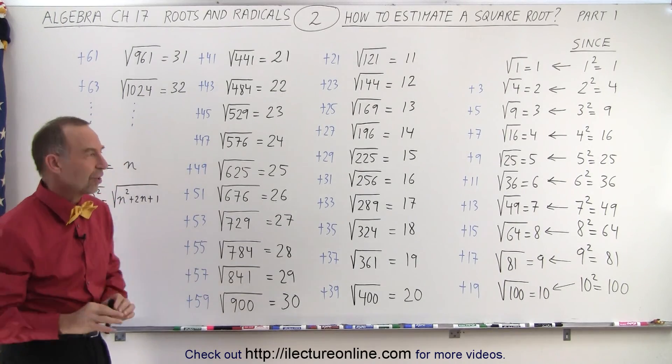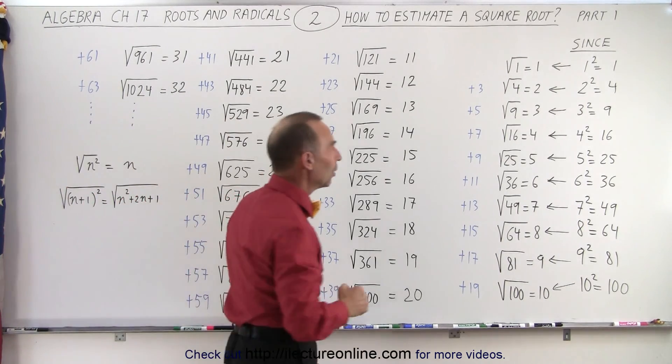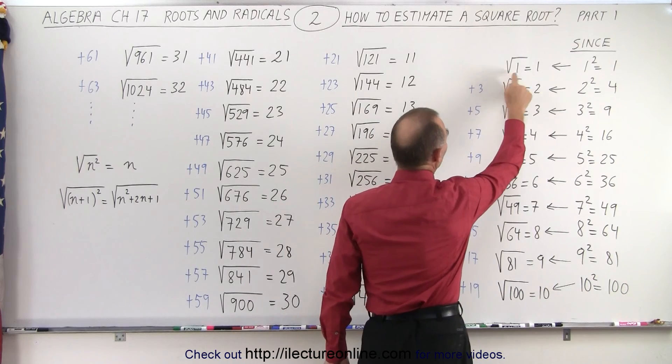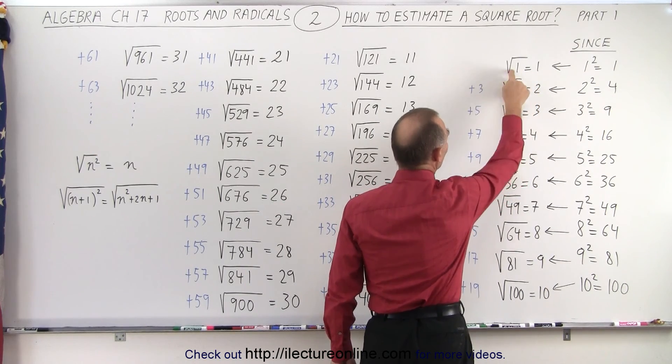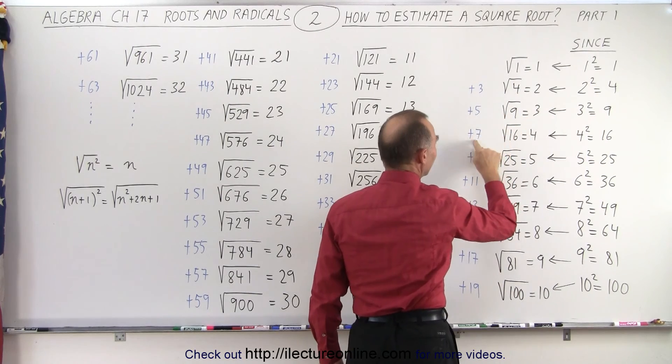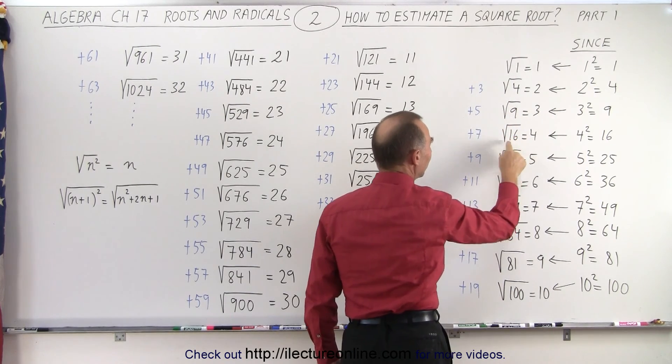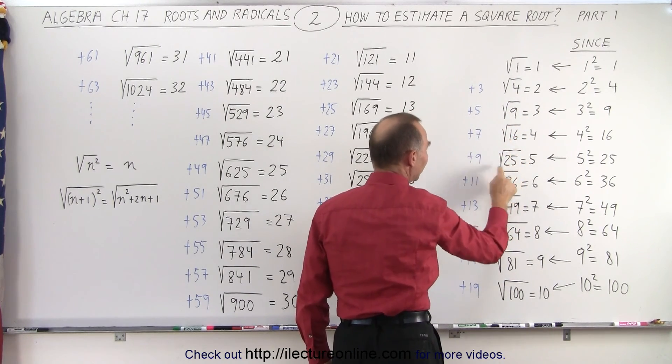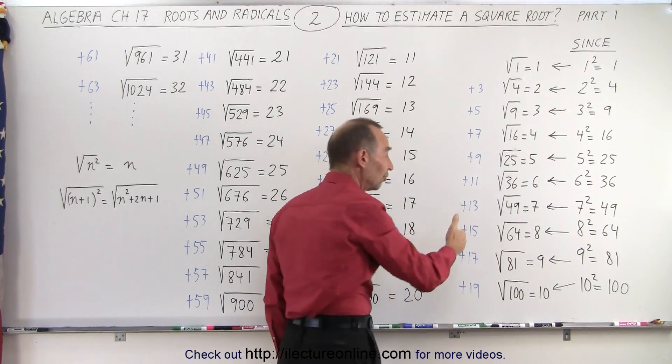Now you may notice something interesting. There's a pattern here. Notice that the square root of 1 is 1. If we now add 3 to 1, we get 4. If we add 5 to 4, we get 9. If we add 7 to 9, we get 16. If we add 9 to that, we get 25. Add 11 to that, we get 36, and so forth.